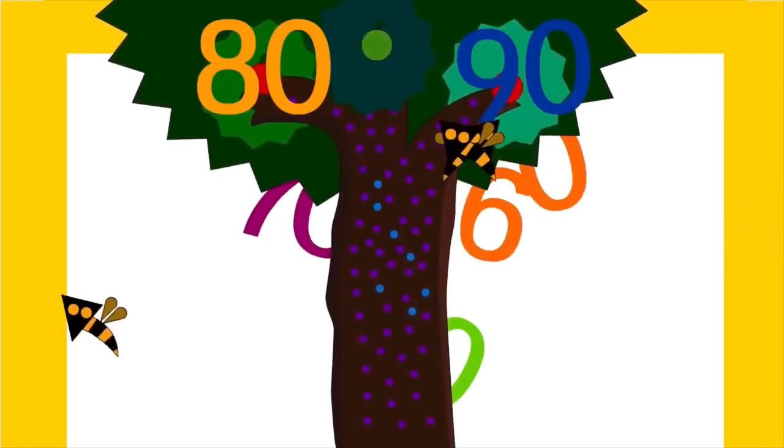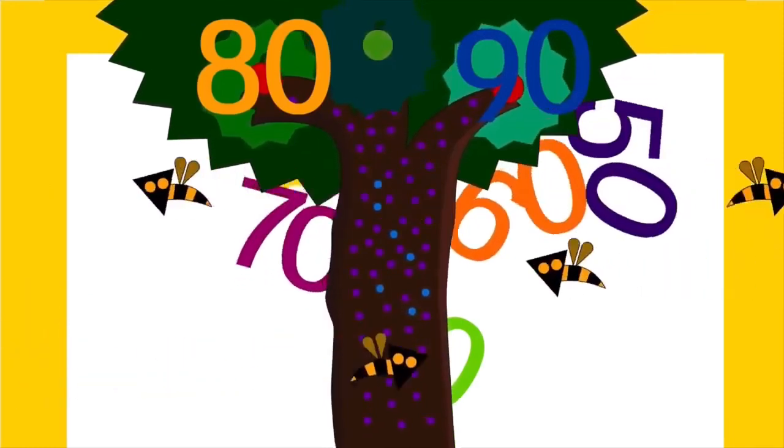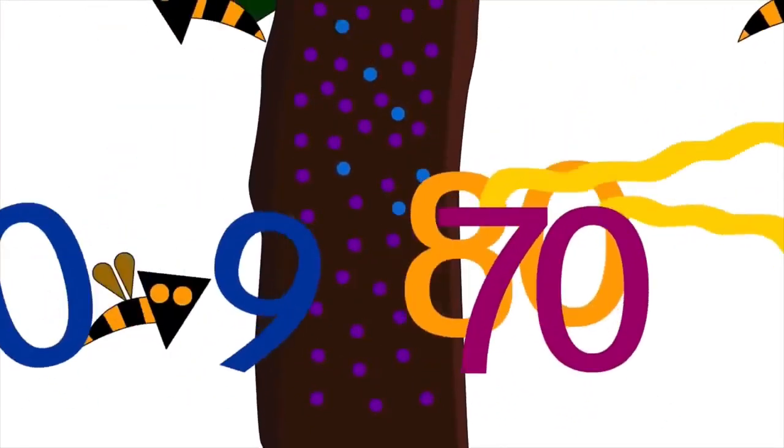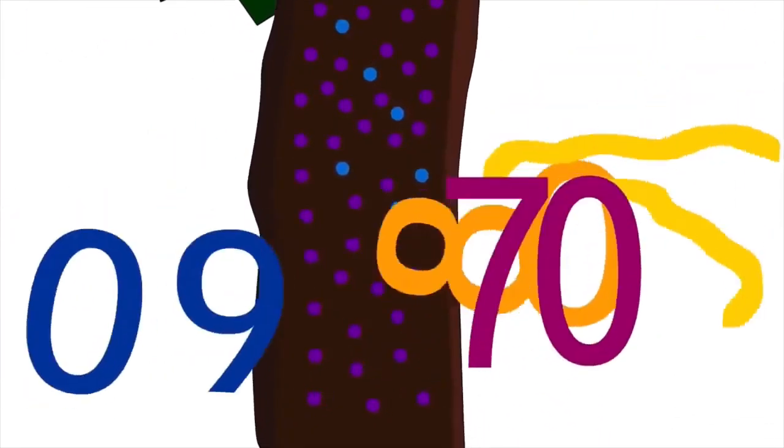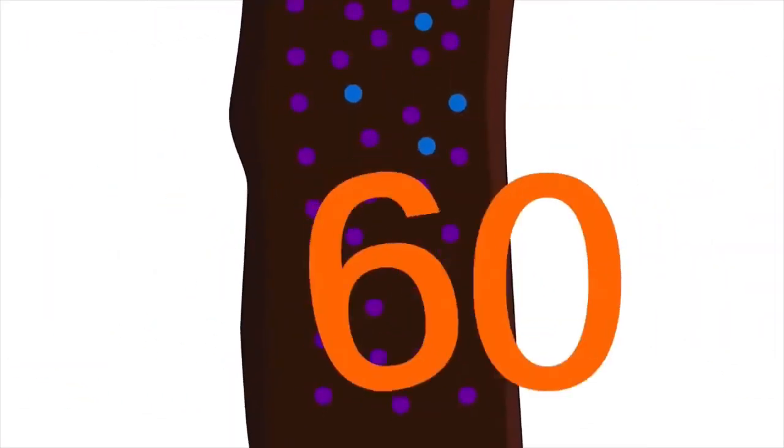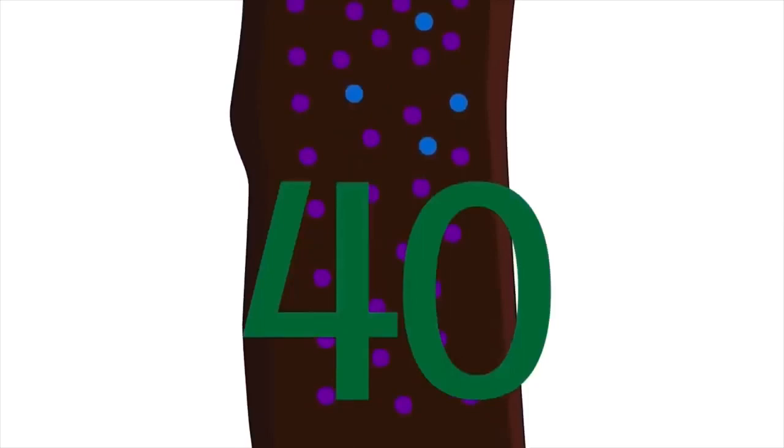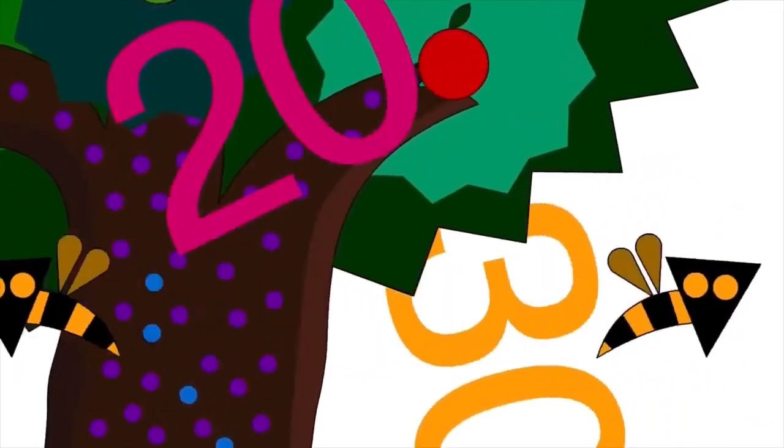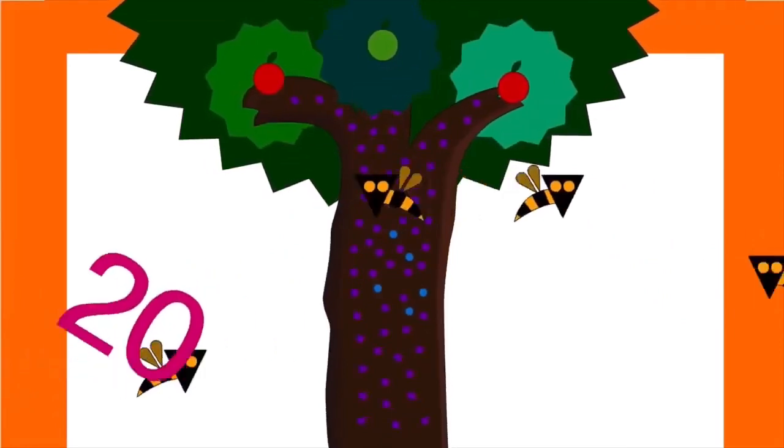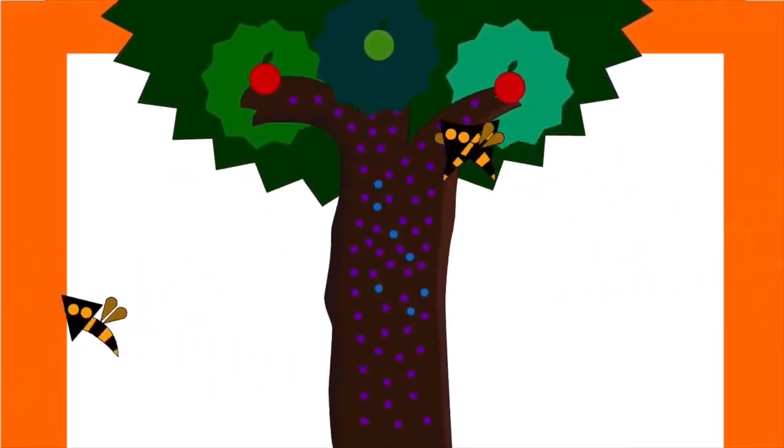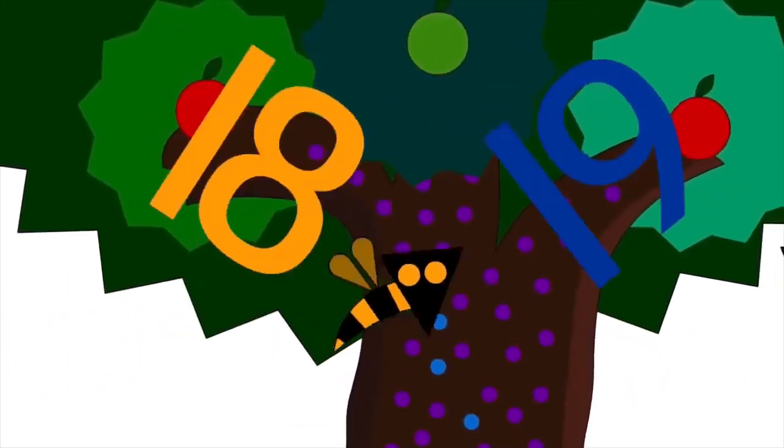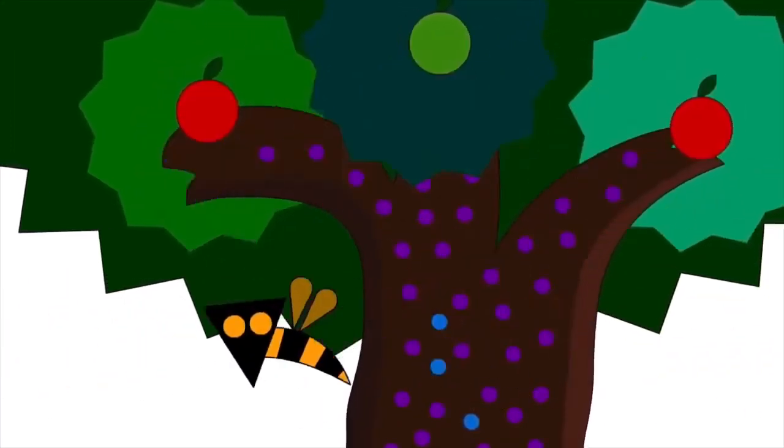The bumblebees shout, and all the numbers tumble out. 90, 80, 70 fall, hit the ground in a free-for-all. 60, 50, 40 run, no more climbing, no more fun. 30 next and sweet little 20. Numbers, numbers no longer plenty. 19 and 18, my oh my, frightened numbers jump and fly.